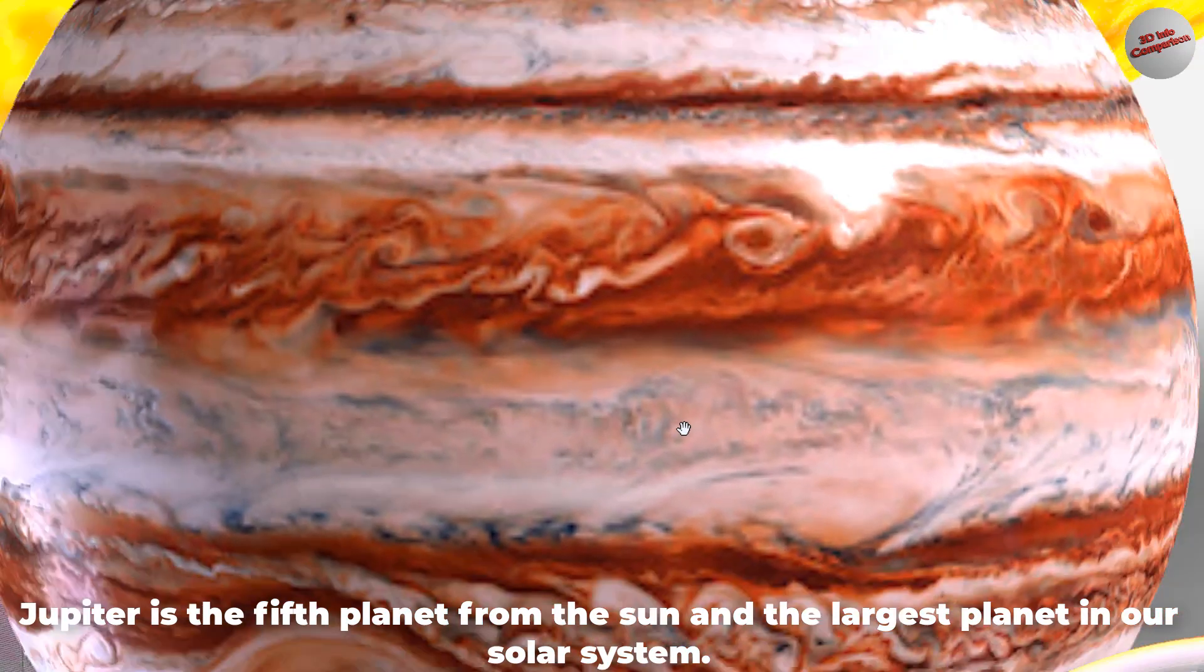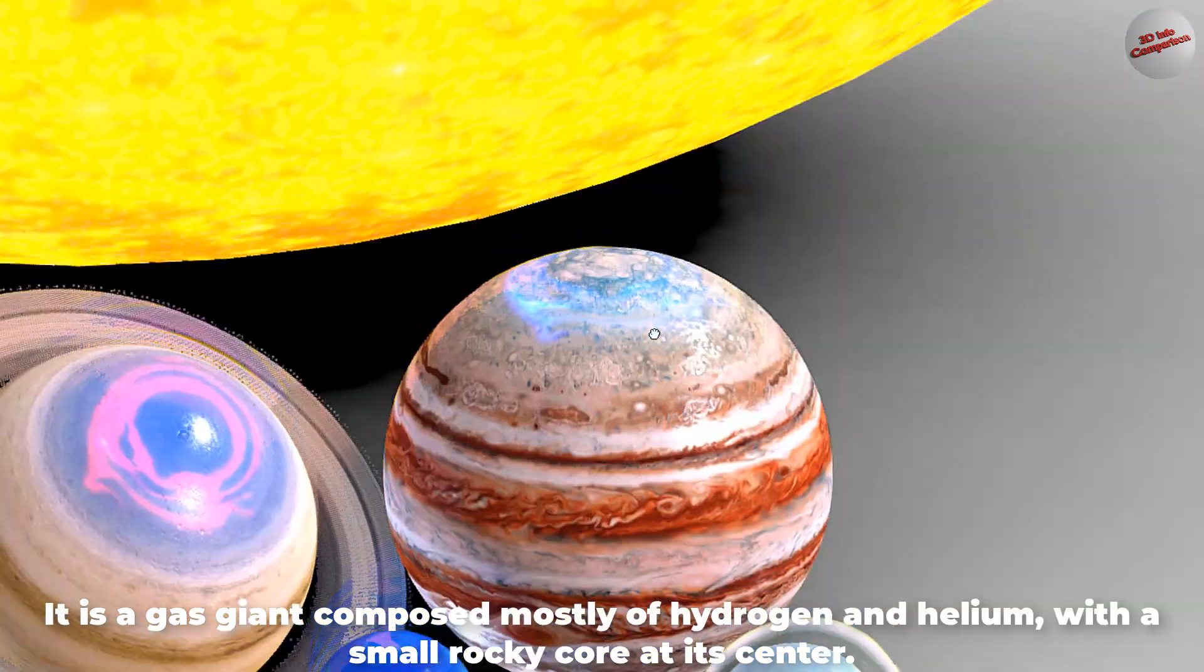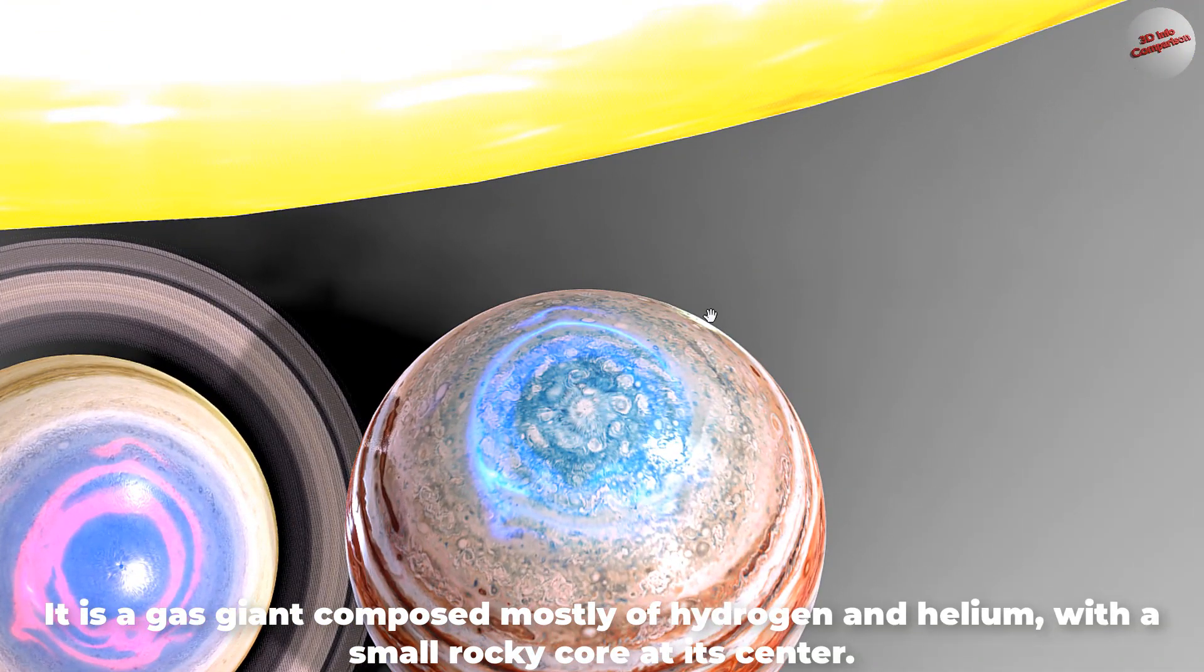Jupiter is the fifth planet from the Sun and the largest planet in our solar system. It is a gas giant composed mostly of hydrogen and helium, with a small rocky core at its center.